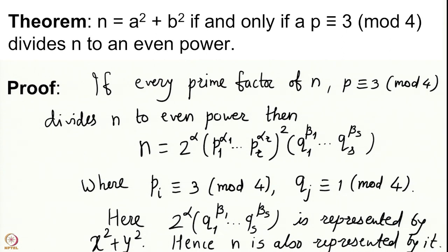Since n is nothing but a perfect square times this quantity, n is also going to be represented by x² + y². So we have proved that whenever primes p ≡ 3 mod 4 divide n to an even power, then n is always a sum of 2 squares.